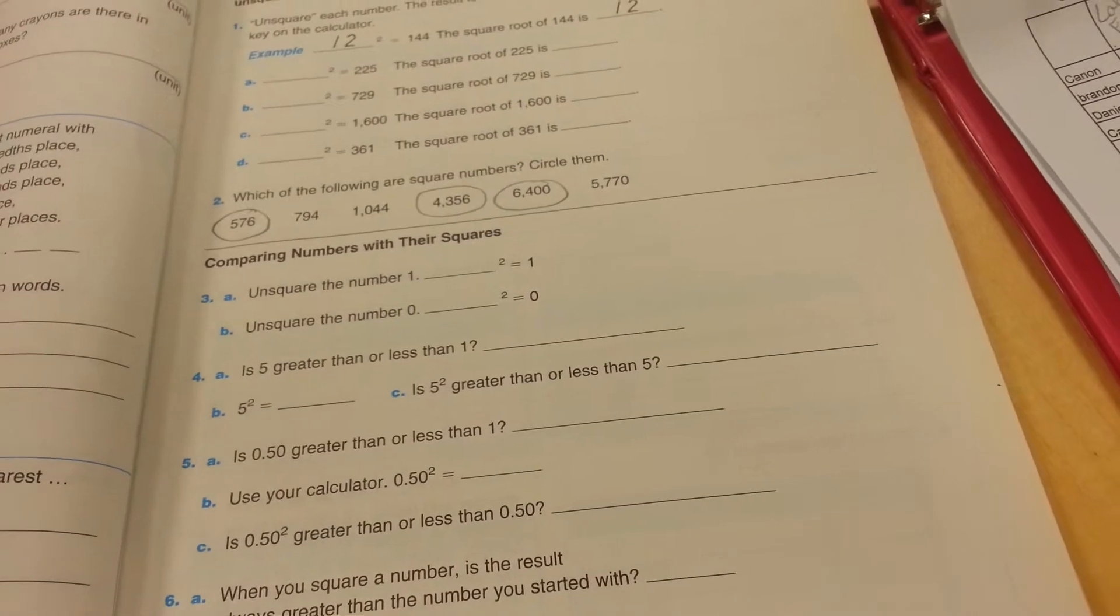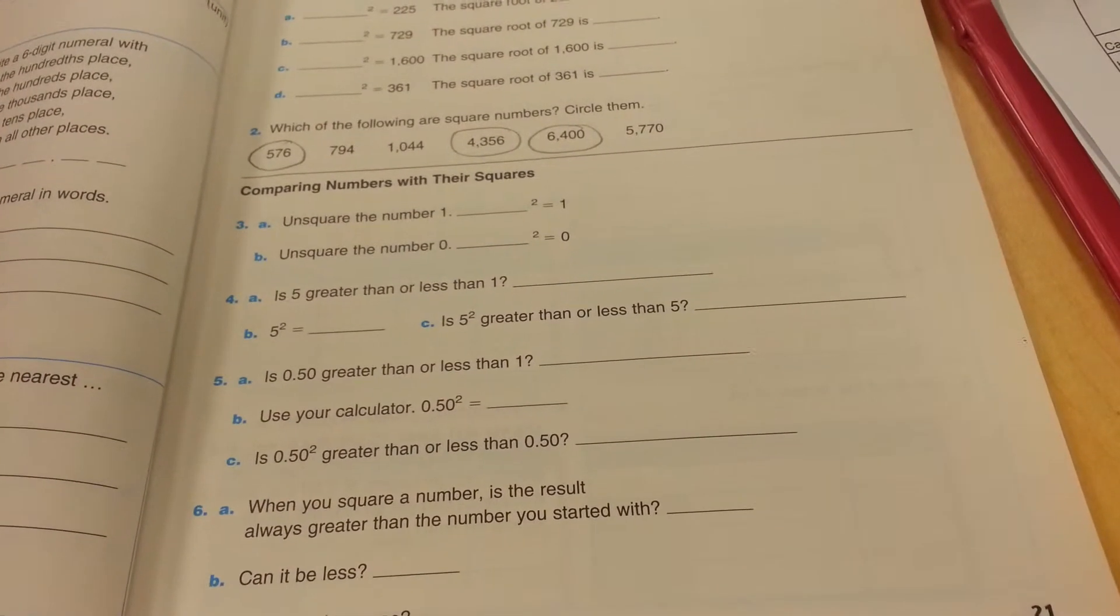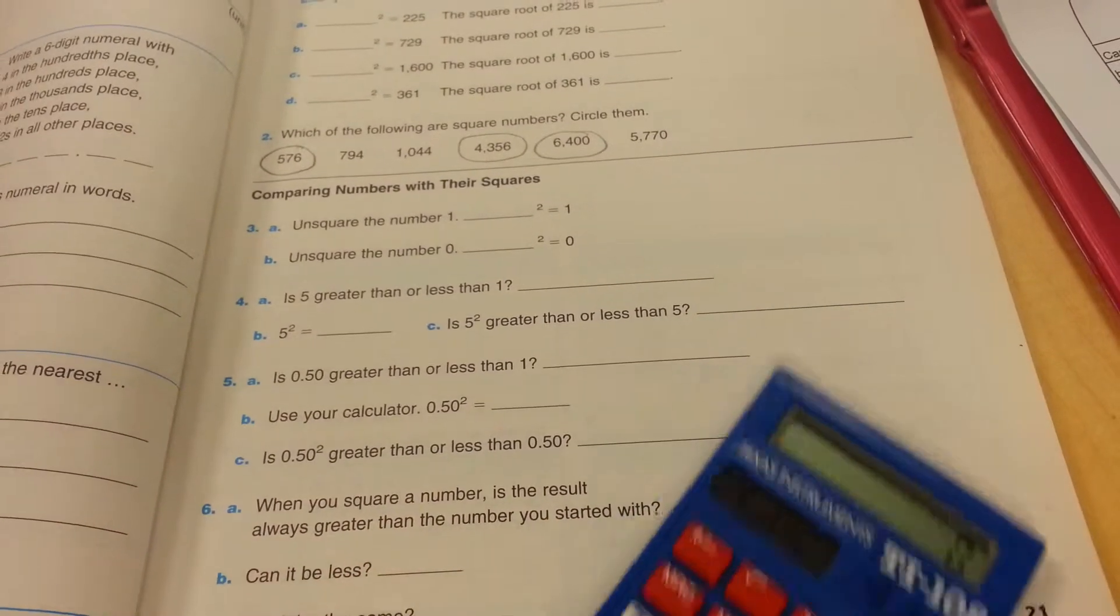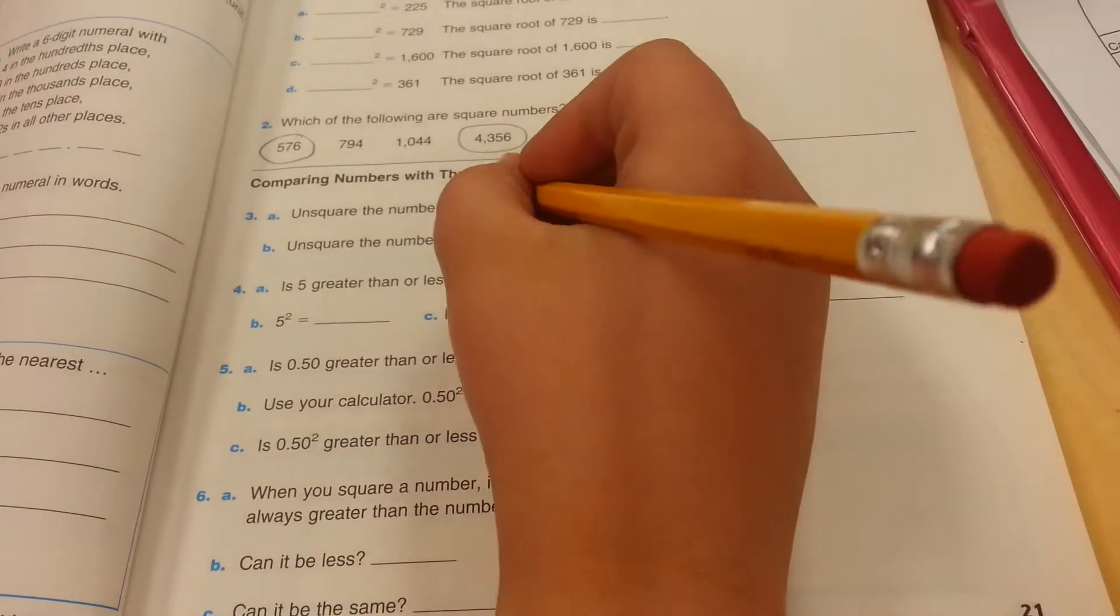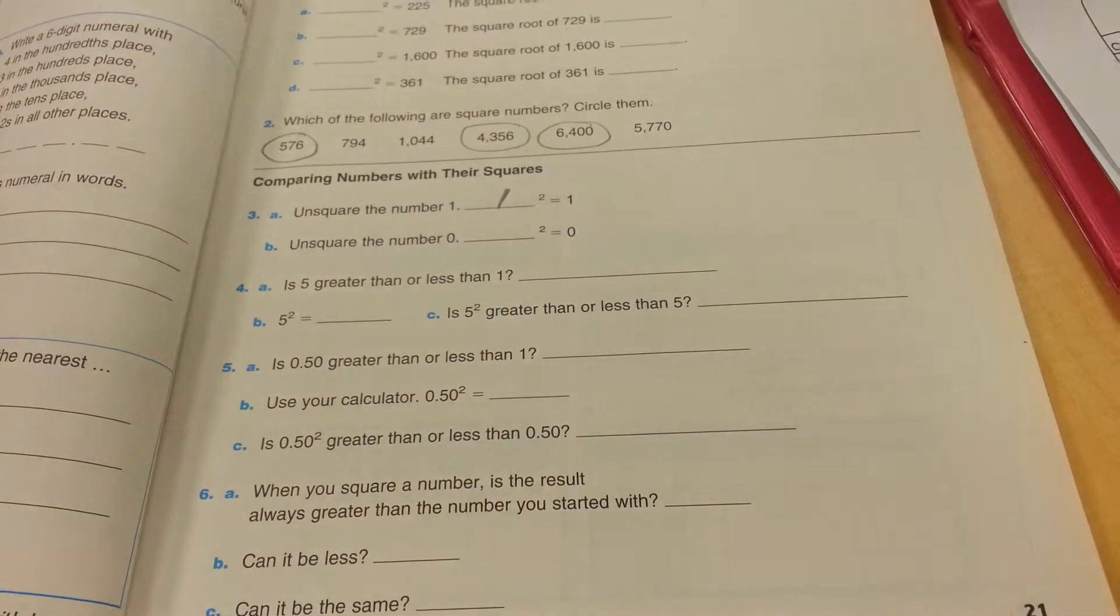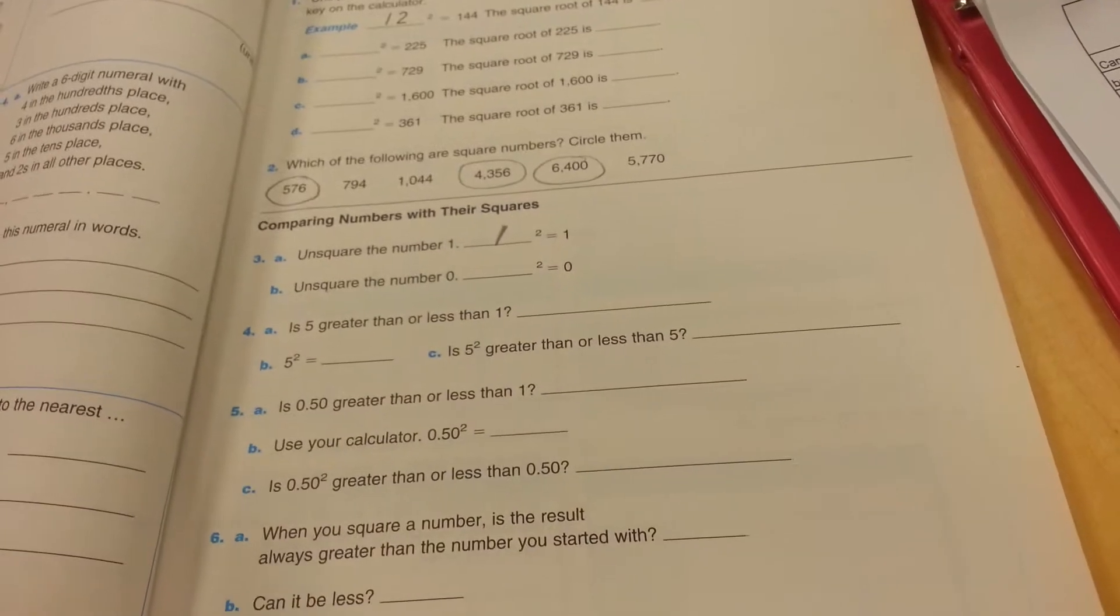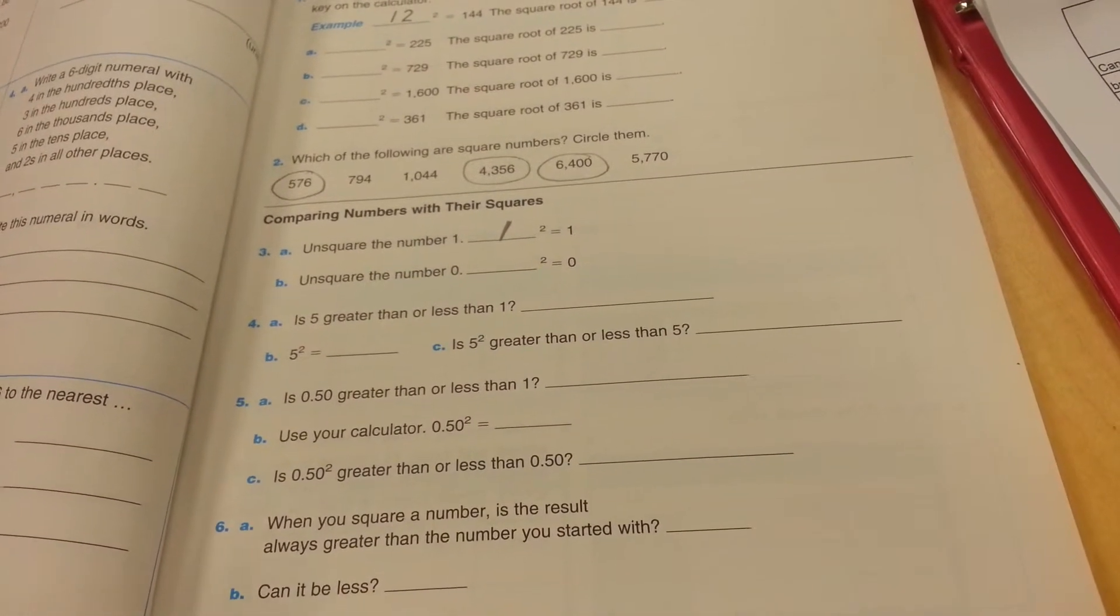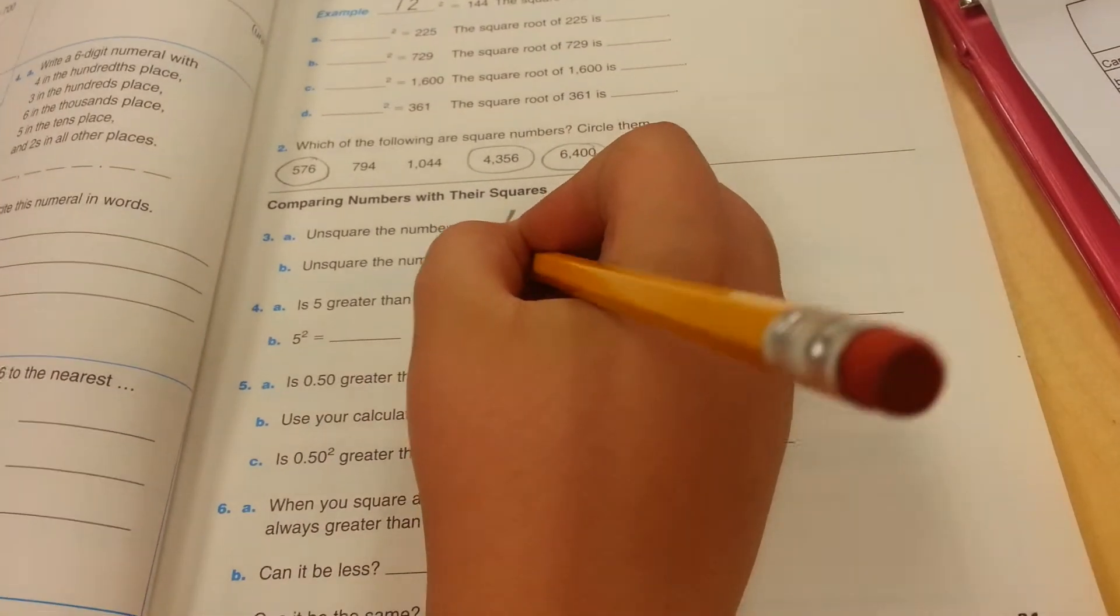Unsquare the number 1. What squared is 1? What times itself is 1? 1. Unsquare is 0. What times itself is 0? 0. 0 times anything is 0.